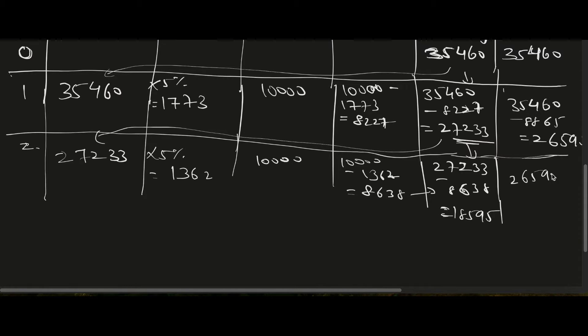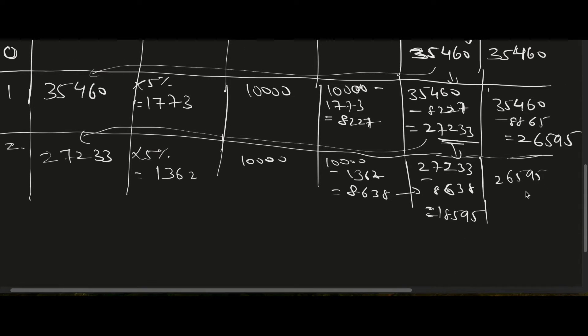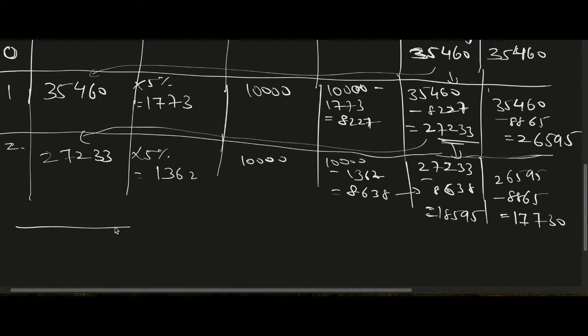The right-of-use asset at end of Year 2 = 26,595 minus 8,865 = 17,730. So at the end of Year 2, the ending lease liability is 18,595 and the asset book value is 17,730.